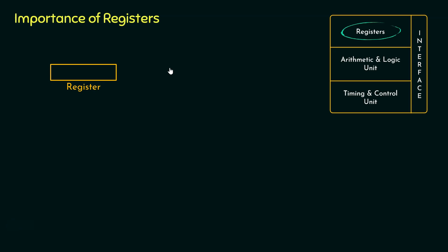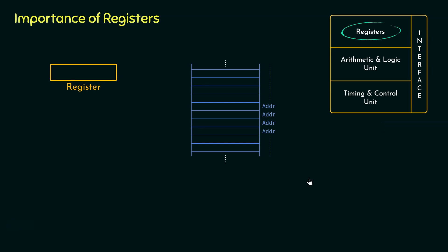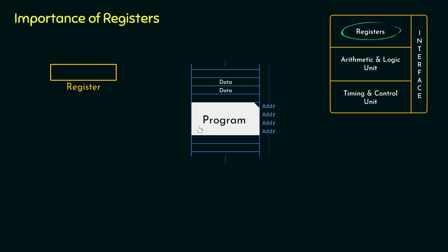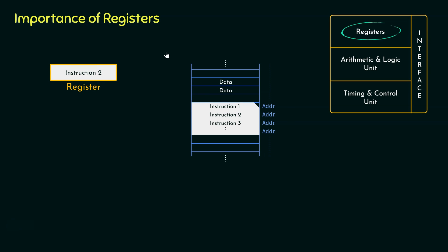Now, what information can that be? With every MPU, in the typical structure, we already have seen that memory is associated, and inside the memory we have different memory locations. In order to address them, we have got addresses. Within the memory we can either store data, or we can also store programs. A program is nothing but the accumulation of different instructions. Therefore, the information which can temporarily be stored inside the registers can be data, instructions, and since we need to specify addresses to access memory locations, registers are also capable of storing addresses.